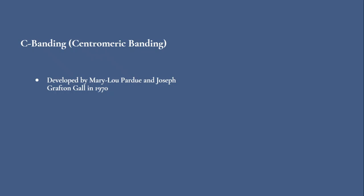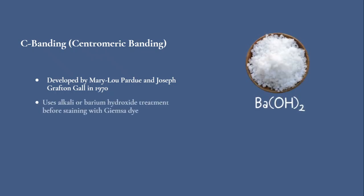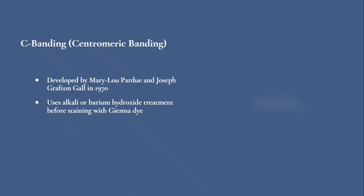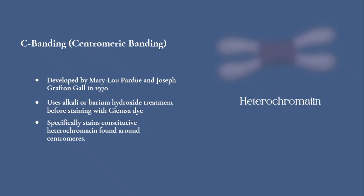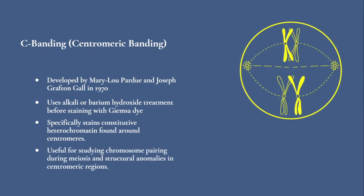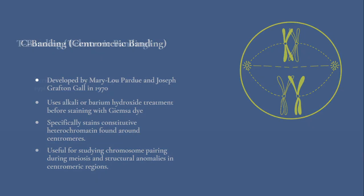C-banding was developed by Mary Lou Pardue and Joseph Grafton-Gall in 1970. C-banding uses alkali or barium hydroxide treatment before staining with Giemsa dye. This method specifically stains constitutive heterochromatin found around centromeres. Constitutive heterochromatin is a permanently condensed and transcriptionally inactive type of chromatin, useful for studying chromosome pairing during meiosis and identifying structural anomalies in centromeric regions.